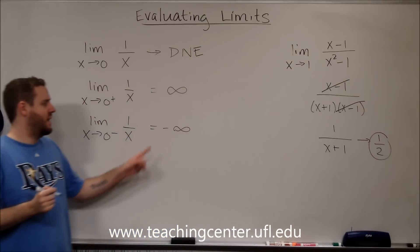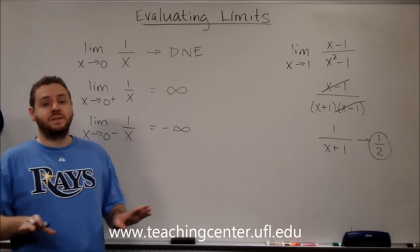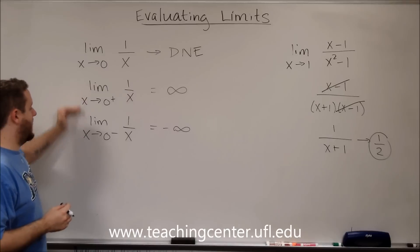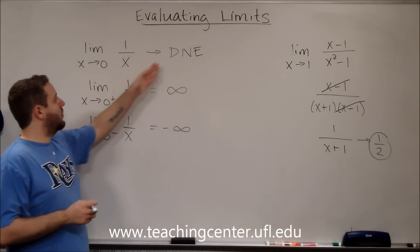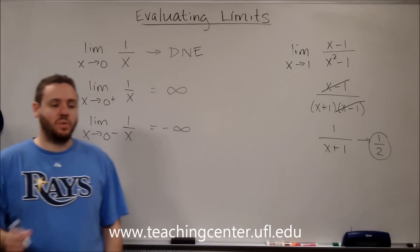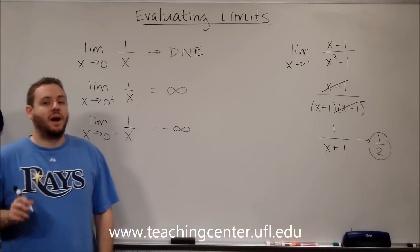So it's important to note that infinity, negative infinity, and does not exist are all very different things. If you had a function such that from the right and from the left they were both infinity, infinity, then the limit would exist, and it would be infinity. So does not exist is reserved for when the limits from the right and the left do not exist.